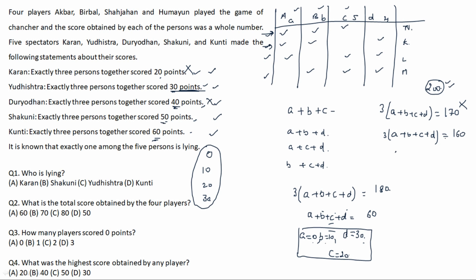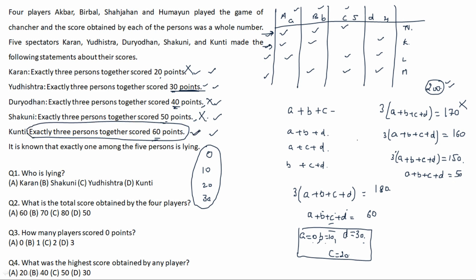Checking the 50-point removal: 200 minus 50 equals 150, and 150 divided by 3 equals 50, so a+b+c+d equals 50. However, the condition that exactly 3 persons scored 60 points cannot be satisfied if all four persons only sum to 50 — so this case is also eliminated. For the 60-point removal: 200 minus 60 equals 140, and 140 is not divisible by 3, so this case is also eliminated.